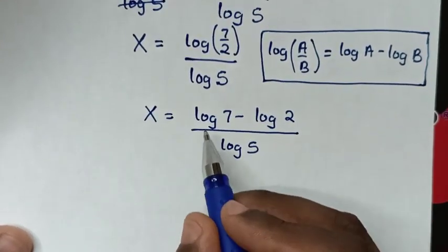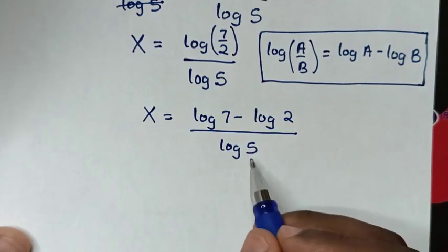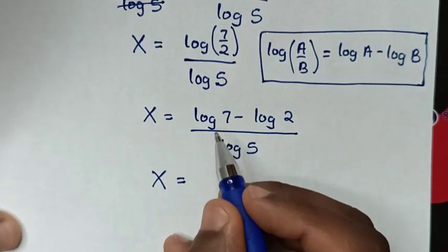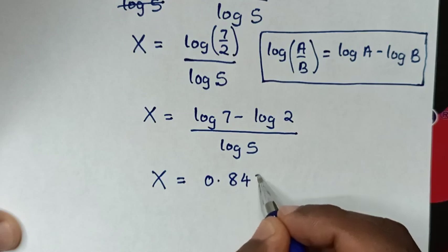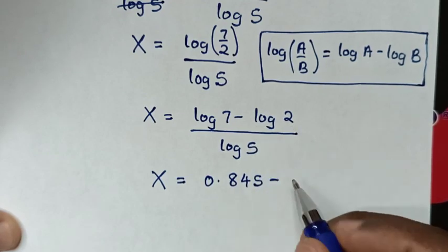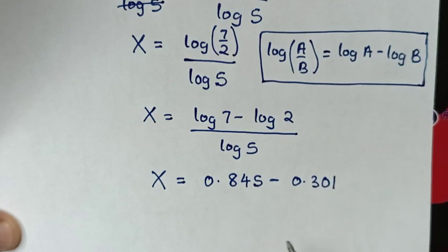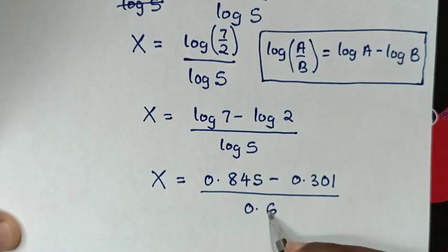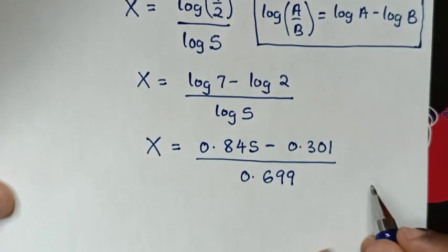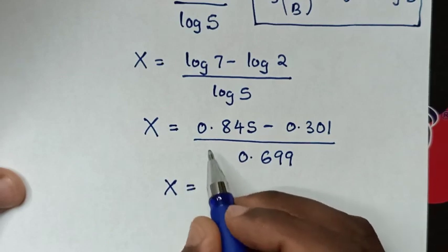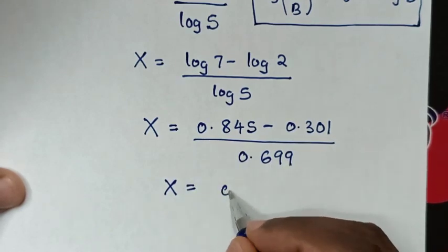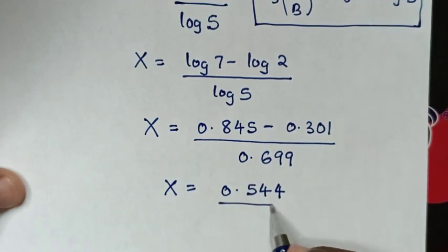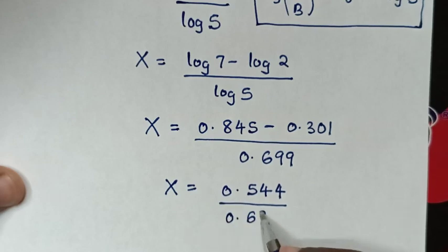Then in the next step, we'll substitute log of 7, log of 2, and log of 5 from the calculator. So it will be x is equal to log of 7 is 0.845, minus log of 2 is 0.301, then over log of 5 which is 0.699. Then it will be x is equal to 0.845 minus 0.301 which is 0.544, then over 0.699.